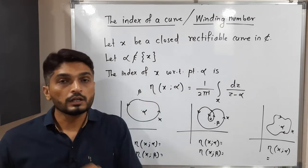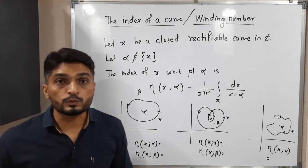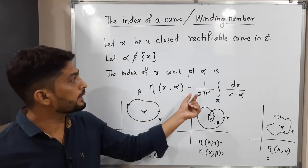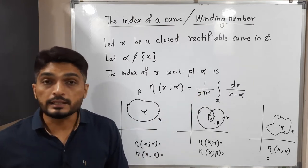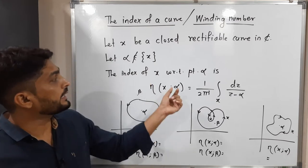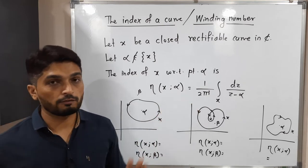Then the index of x with respect to alpha is calculated as: 1 over 2πi times the integration over x of dz over z minus alpha. This is the formula for finding the winding number about alpha or index of x with respect to alpha. But using our common sense we can easily find its value.